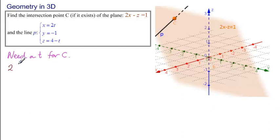So we have 2 times 2t, and then minus z, which is 4 minus t, equals 1. So an equation in one unknown, 4t minus 4 plus t equals 1. So 5t minus 4 equals 1. So 5t equals 5, or t equals 1.